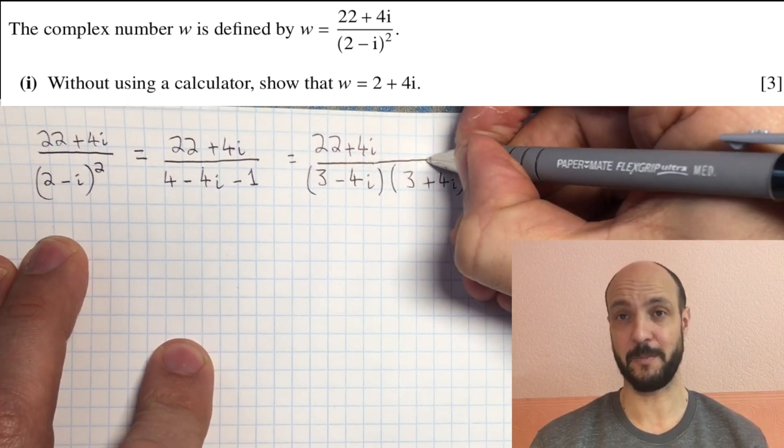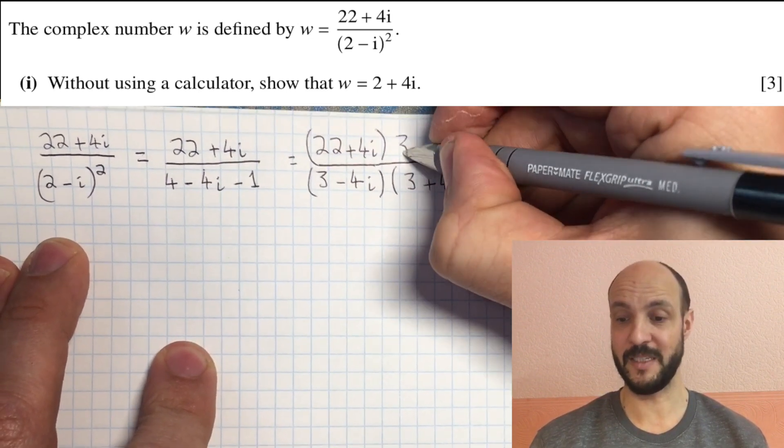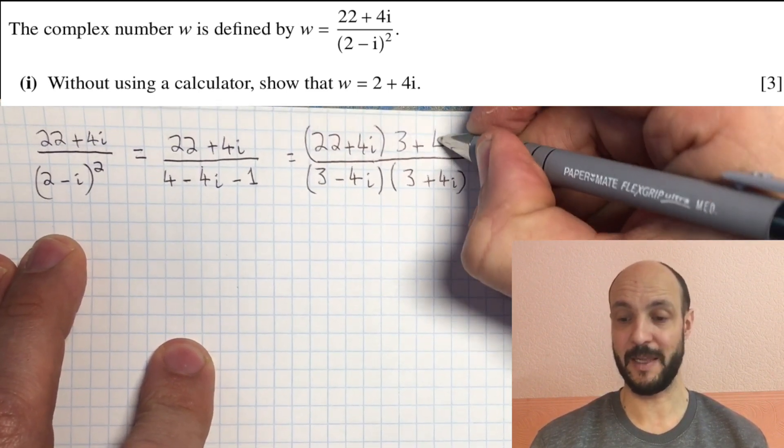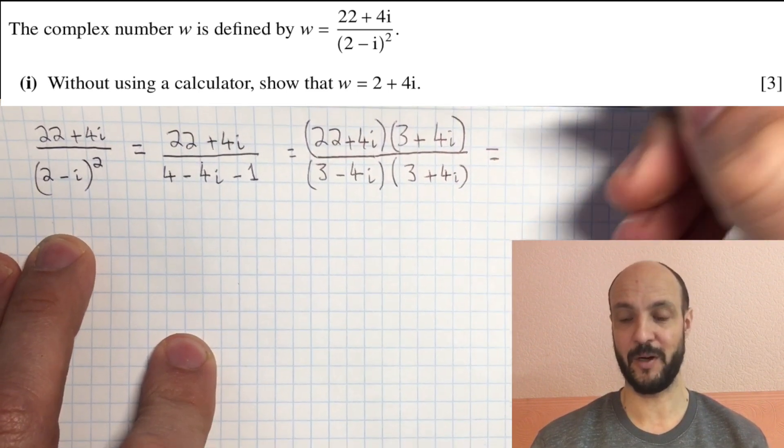But obviously being a fraction, we need to multiply both the top and the bottom by 3 plus 4i. So we get 22 plus 4i times by 3 plus 4i all over 3 minus 4i times by 3 plus 4i.